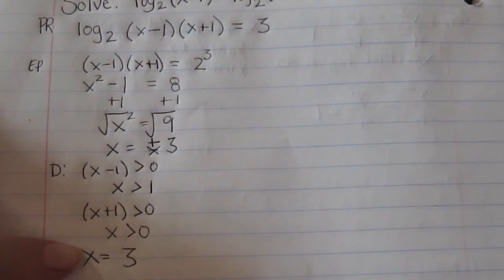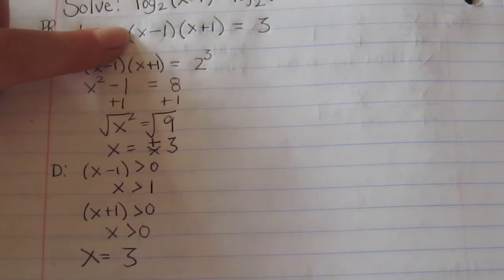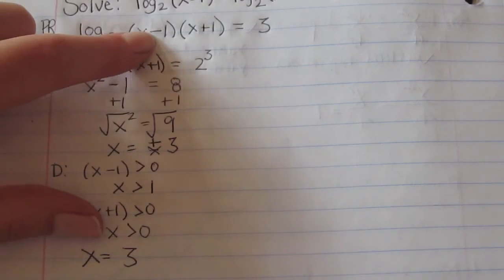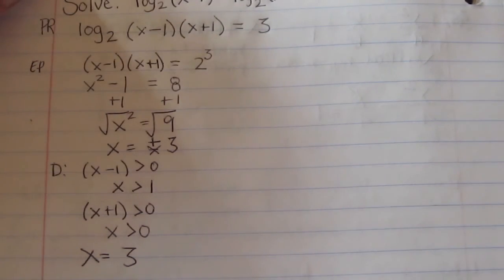To make sure the 3 checks, you just put 3 in place of x. So 3 minus 1 is positive 2 and 3 plus 1 is positive 4.